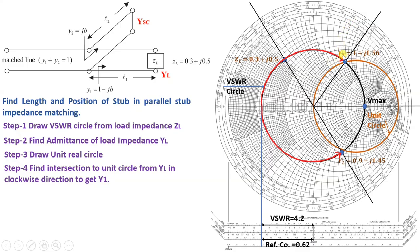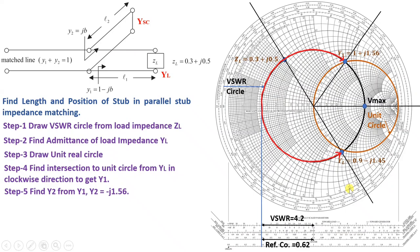Based on Y1 we can now get Y2. Since Y1 + Y2 must equal 1, Y2 will have the opposite imaginary component. Here the imaginary part of Y1 is +j1.56, so Y2 = -j1.56. The real component of Y2 is 0, placing it on the outermost circle of the Smith chart where the real value is 0. The point at -j1.56 is marked on this outer circle.